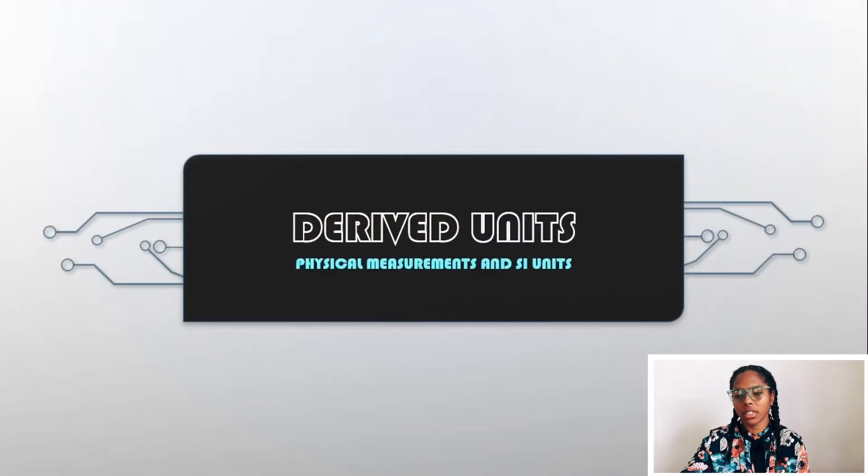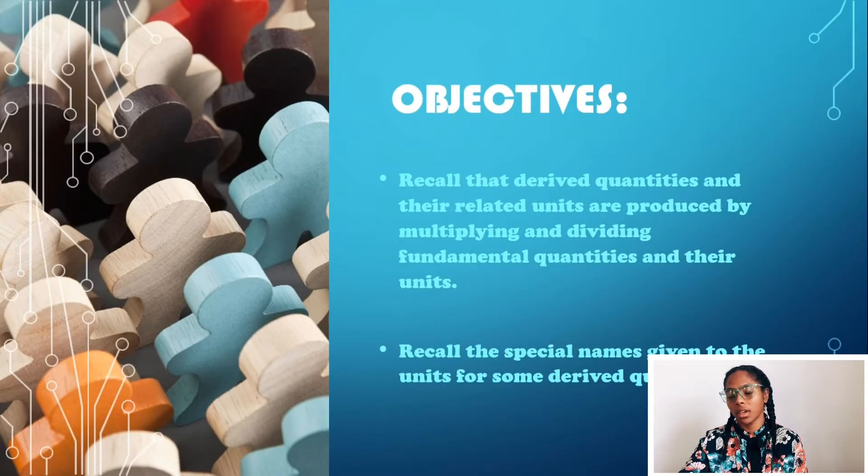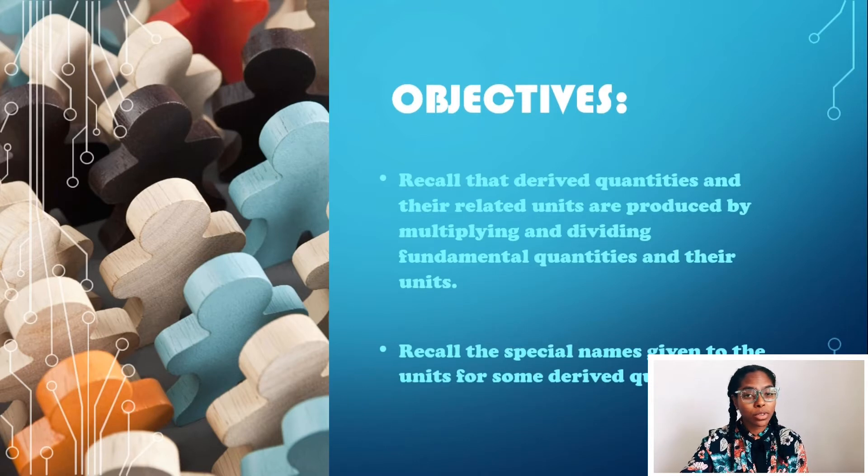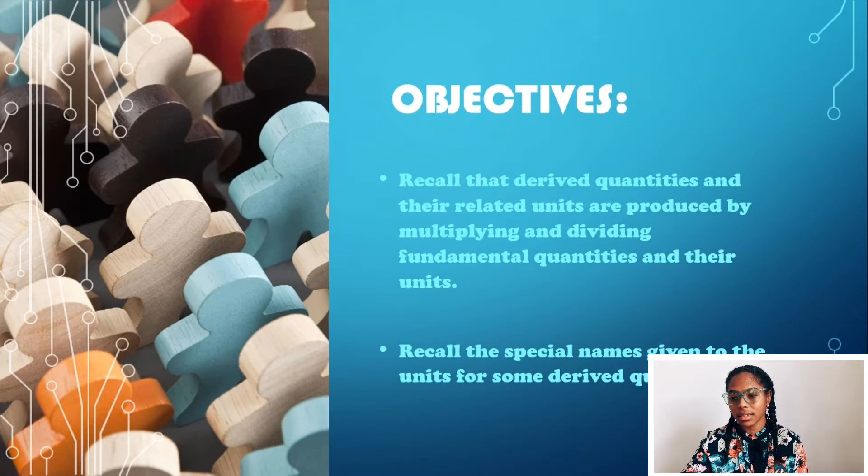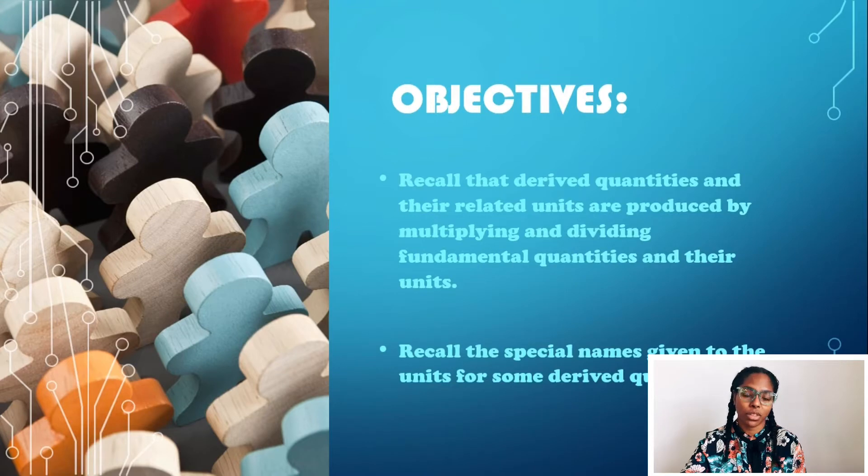So, derived units. What are our learning objectives? At the end of this video, we should be able to recall that derived quantities and their related units are produced by multiplying and dividing fundamental quantities and their units. Learning objective number two is that we should be able to recall the special names given to the units for some derived quantities.